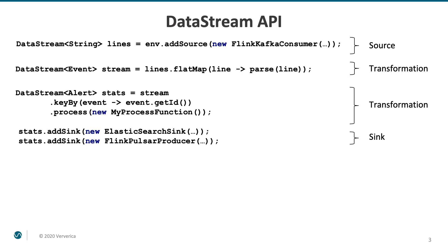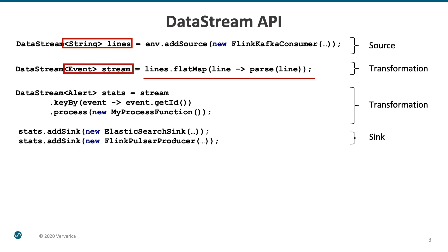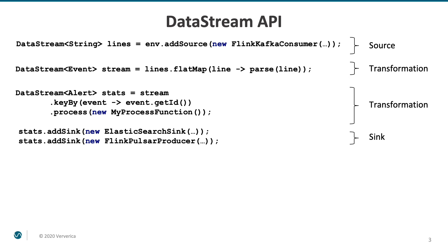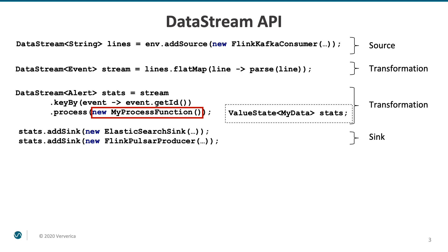Next we see a series of transformations. The first one parses the data — in this example we simply consume strings and transform them into real Java objects from your domain. The second transformation performs the actual business logic of this program. You can see here how you can add a custom process function to the pipeline. Those functions just need to conform to a certain interface, but what you do inside them is entirely up to you. From within this function you also get access to the fault-tolerant state managed by the framework. Notice that you can persist objects of your own custom data types, like MyData in this case.